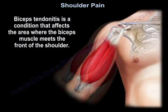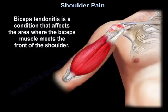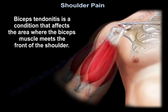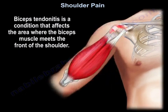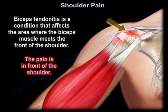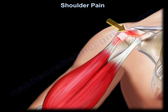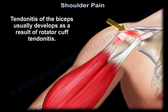Bicep tendonitis is a condition that affects the area where the bicep muscle meets the front of the shoulder. The pain is in front of the shoulder. Tendinitis of the biceps usually develops as a result of rotator cuff tendinitis.